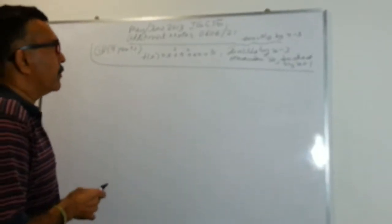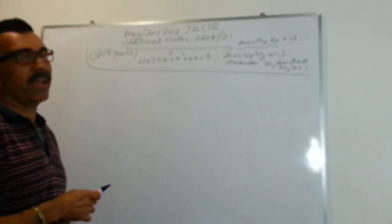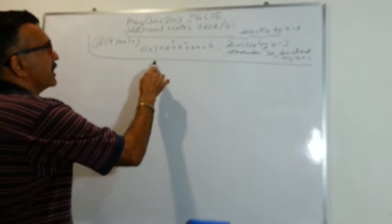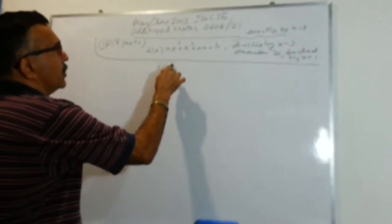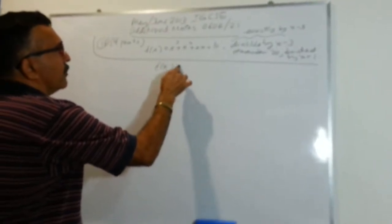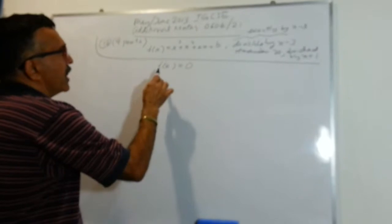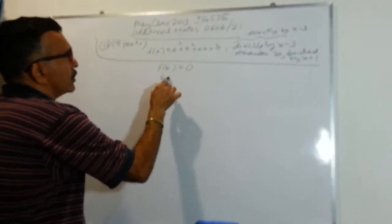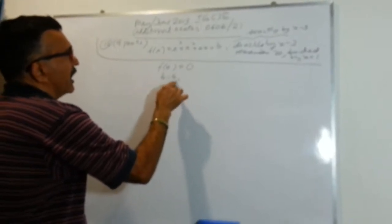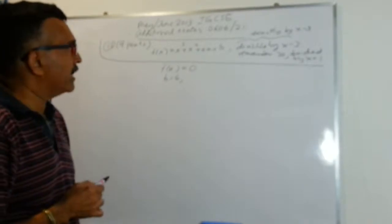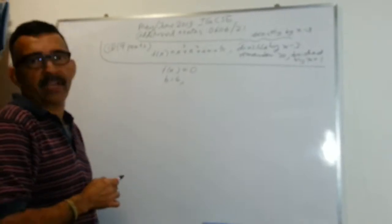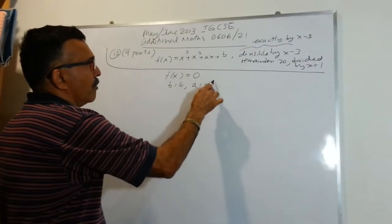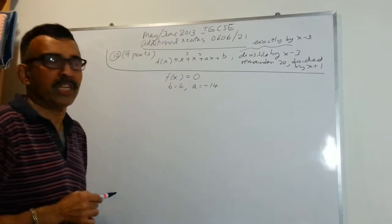Now we have to solve f of x equals to 0. In the second part of the problem, we are asked to solve f of x equals to 0, and we are asked to use the value of b equals to 6 and the value of a that we obtained in the first part, a equals to minus 14.